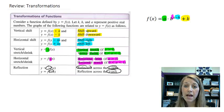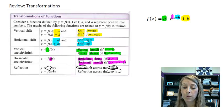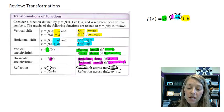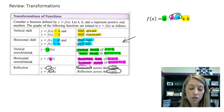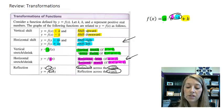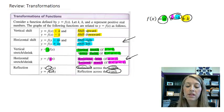So same exact rules that we learned earlier about transformation. Now it just applies to exponents. If it's in the inside of the exponent, that's what we consider to be the inside of the function, the horizontal ones. If it's on the outside of the exponent, then that's what we consider to be vertical.